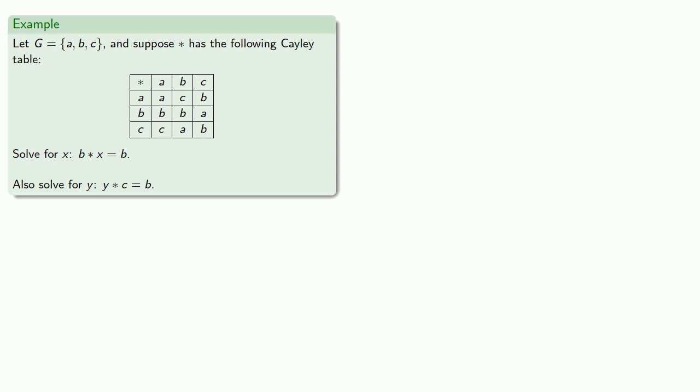For example, let's solve for X, B star X equal to B. And let's also solve for Y, Y star C is equal to B. So if we want to solve B star X equal to B, we want B times something to give us B. And so we go to the B row of the table, and we look across and we see that B star A is equal to B. And so that tells us that X is equal to A.